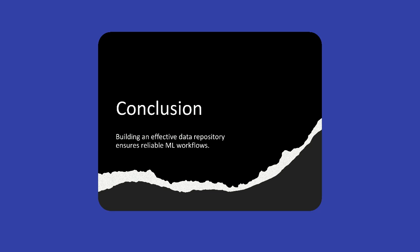To summarize: creating an effective data repository for machine learning involves identifying data sources, selecting the right storage solutions, and ensuring scalability, security, and cost efficiency. AWS provides a range of services — from S3 for data lakes to Redshift for analytics — that cater to different machine learning storage needs. With a solid data foundation, you can build more accurate, reliable, and efficient machine learning models. Thank you for your time, and I look forward to your questions in the next session.